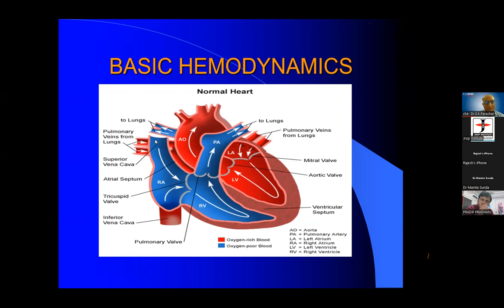The blood from the upper extremities comes from the superior vena cava and from the lower extremities by the inferior vena cava, and they go to the right atrium. From the right atrium, they go to the right ventricle. Now remember, the atrioventricular valves — that means the mitral and tricuspid valve — they open in diastole and close in systole. Remember this basic thing.